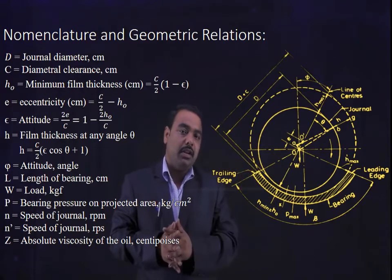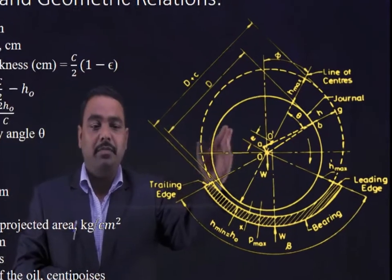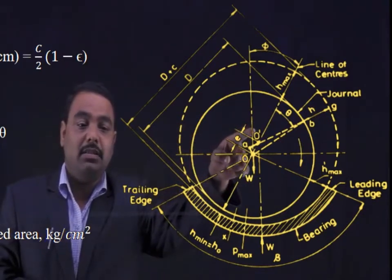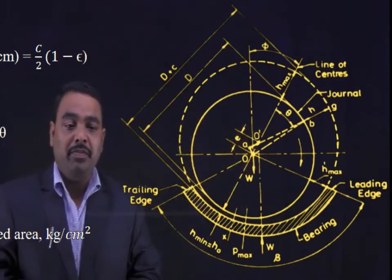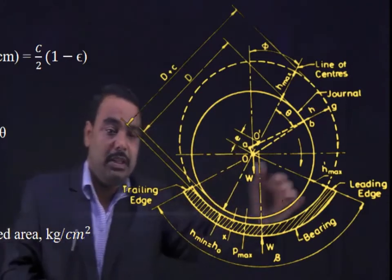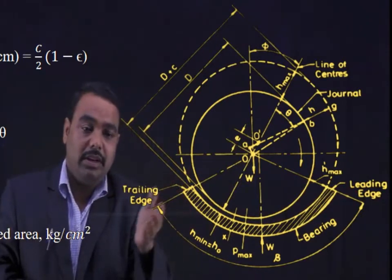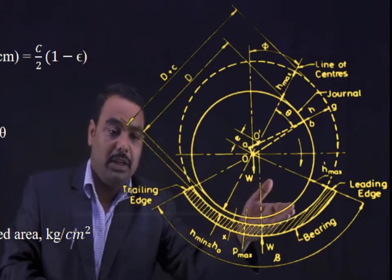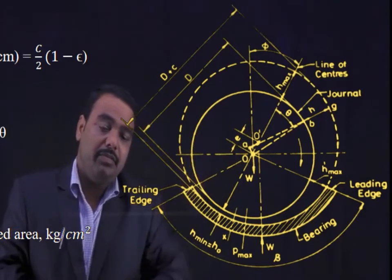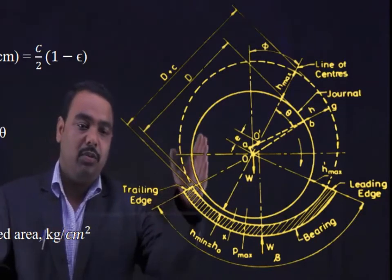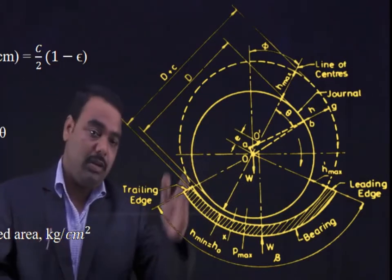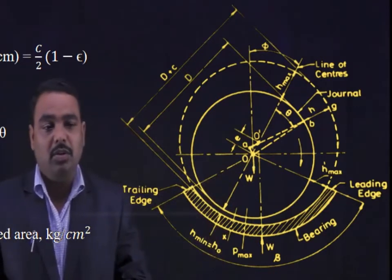A typical diagram of journal bearing has been shown. In this, you can identify O — O is the center of the journal, or you can say the shaft. And O dash is the center of the hub. In the running condition, the shaft or journal is in the situation shown. This end is called the leading edge and this end is called the trailing edge. The line joining the centers of the shaft and the hub is called the line of center. A load W is acting — W is the weight of the shaft or the radial load acting on the journal.